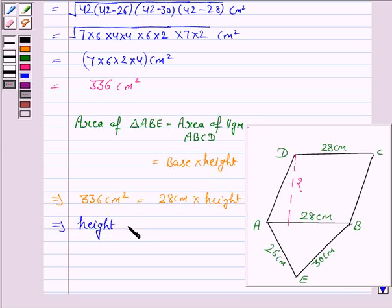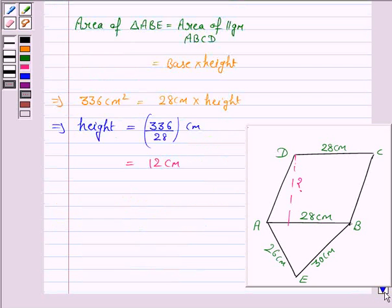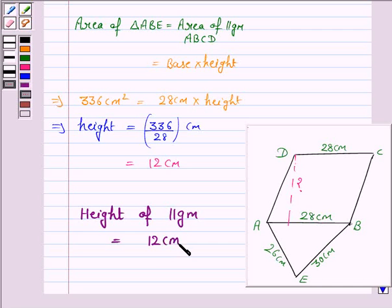So this implies the height of the parallelogram is equal to 336 upon 28 centimetres, which is equal to 12 centimetres. Hence the height of the parallelogram is 12 centimetres.